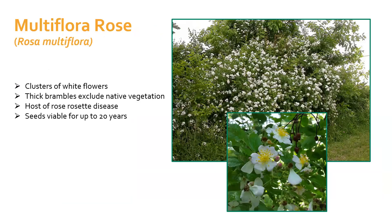Another invasive shrub you may have on your property is multiflora rose. This plant has thorns and clusters of white flowers, as opposed to native roses which only have one flower at the stem end. It forms red berries later in the season. Multiflora rose produces thick thickets which exclude native vegetation and make it nearly impossible and very painful to walk through. This plant is the host of rose rosette disease, which disfigures rose flowers and leaves and causes excessive thorniness. Multiflora rose seeds can remain viable in the soil for up to 20 years, so even if you remove the plant, they can still pop back up. Mowing plants often throughout the growing season for multiple years will kill the plant, and smaller plants can be controlled by hand-digging — be sure to wear gloves because the thorns are very sharp.